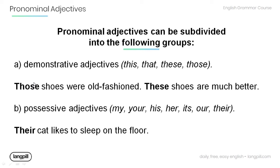Pronominal adjectives can be subdivided into the following groups. First, demonstrative adjectives: this, that, these, and those. For example: 'Those shoes were old-fashioned' and 'These shoes are much better.'